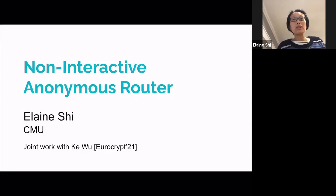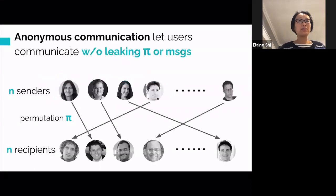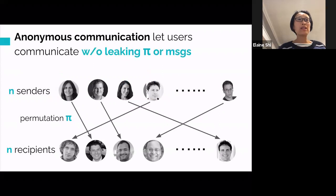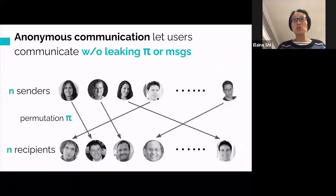I'd like to talk about our work, Non-Interactive Anonymous Router. This is joint work with my student Ke Wu. The anonymous routing problem has been studied for decades. The goal is to let users communicate without leaking who's talking to who. In this picture, we have n senders and n receivers, and there's some permutation pi that determines who talks to who — we also call this the routing permutation. These users want to talk to each other without leaking the message contents, nor the routing permutation itself.